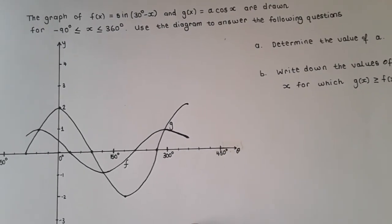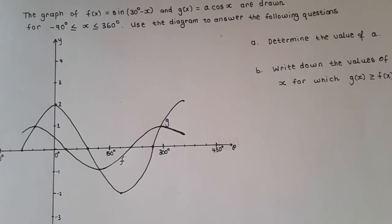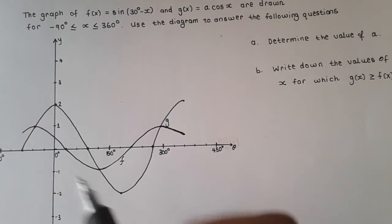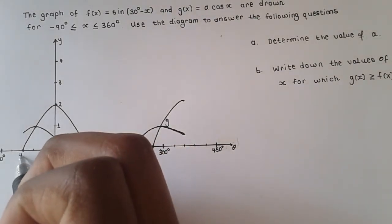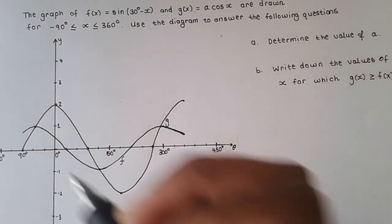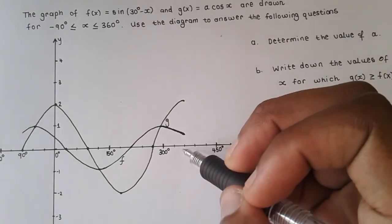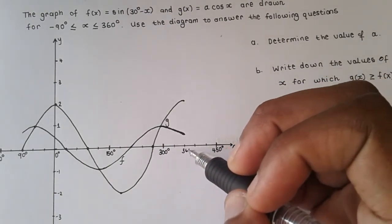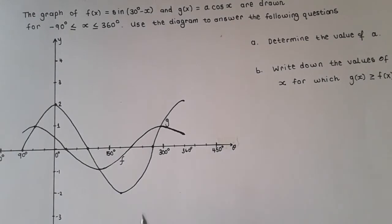We have the graph of f(x) equal to sine of (30 degrees minus x), and g(x) equal to a·cos(x), for the interval minus 90 degrees to 360 degrees. So basically, where these graphs start is at minus 90 degrees, and where they end is at 360 degrees. We're only looking at that specific interval.